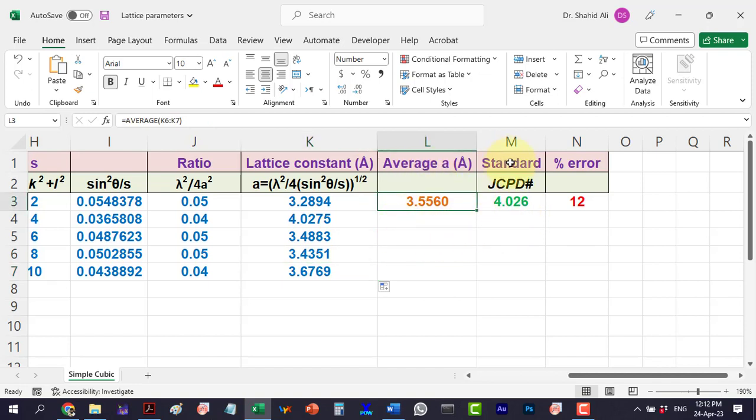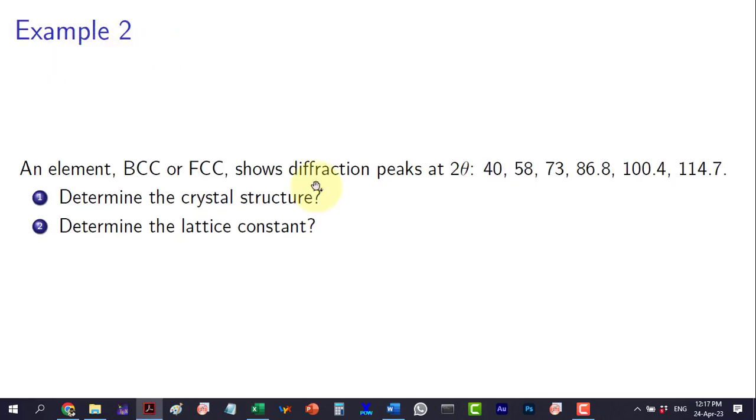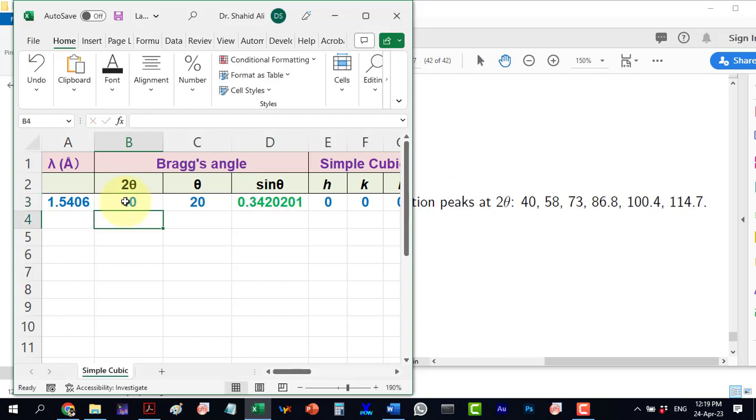The standard value is 4.026 angstrom, so the percent error is 12%. In example 2, we have been provided with the peaks positions and asked to determine the crystal structure and find the lattice constant.